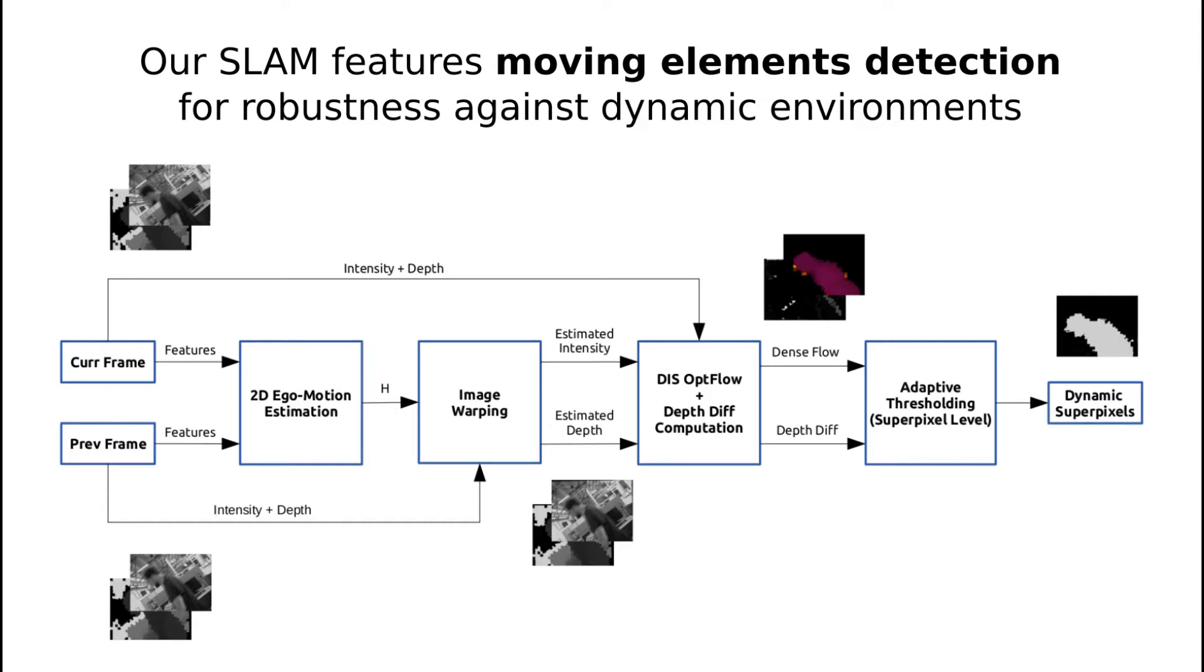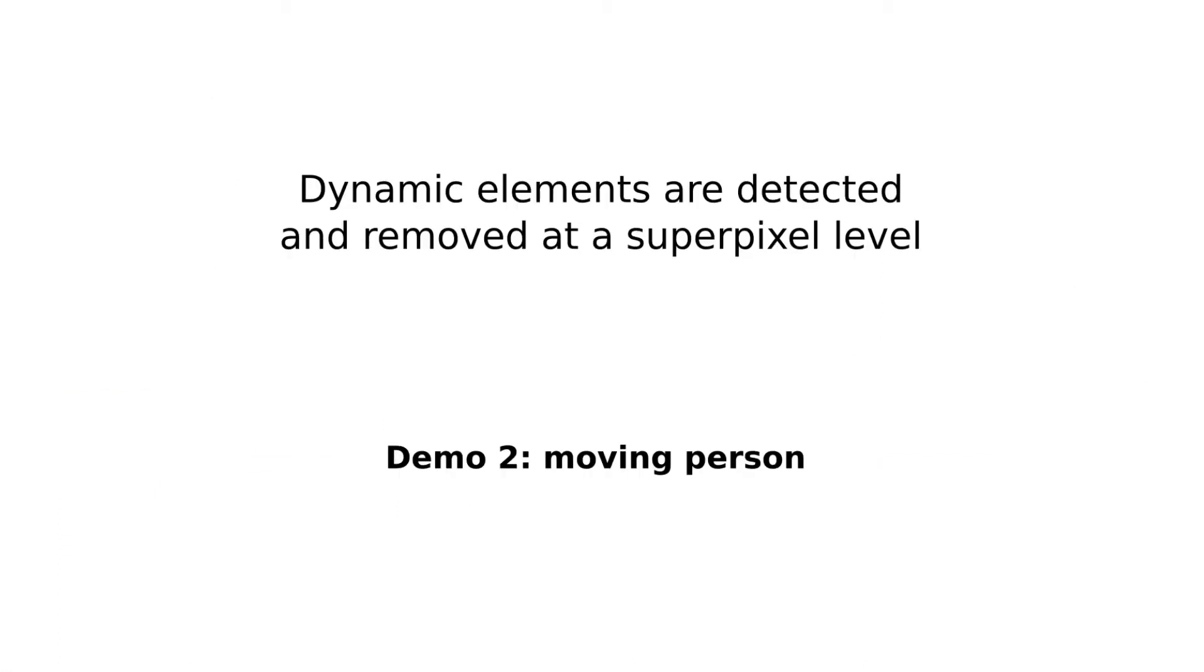Moving object detection based on ego motion compensation and dense optical flow has been integrated to the system in order to ensure robustness against dynamic environments. Dynamic elements are detected at a superpixel level and removed from the rest of the pipeline.